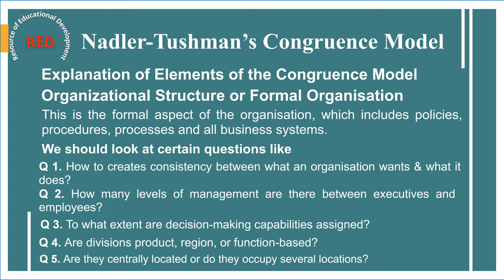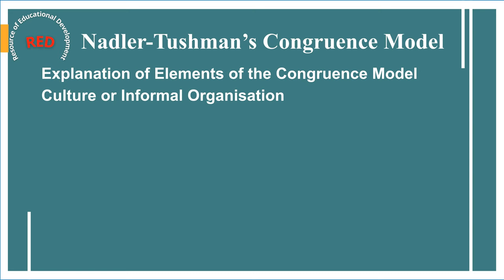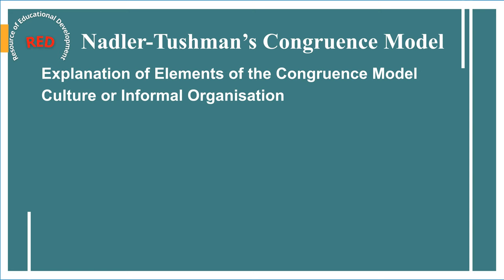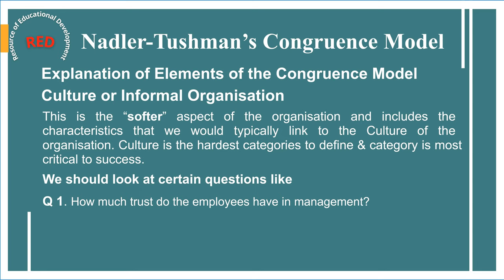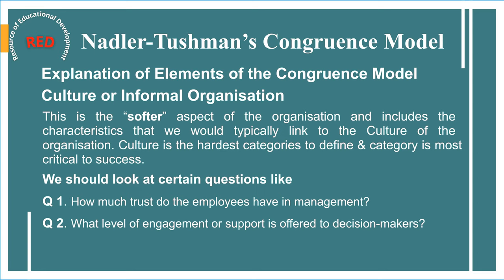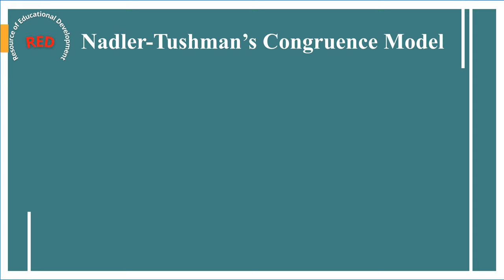The fourth element is culture or informal organization. This is the softer aspect of the organization and includes characteristics typically linked to organizational culture. Culture is the hardest category to define and the most critical to success. It refers to tangible aspects such as values, vision, and leadership style, but also includes intangible aspects of employee-management relations. Key questions include: How much trust do employees have in management? What level of engagement or support is offered to decision-makers? Are the ethics of management expectations sound?